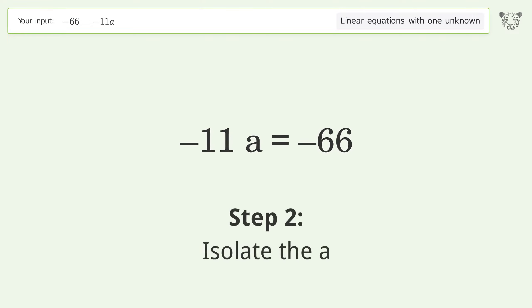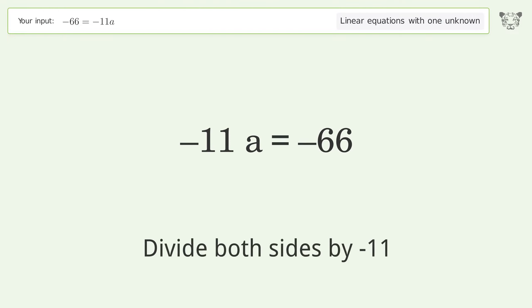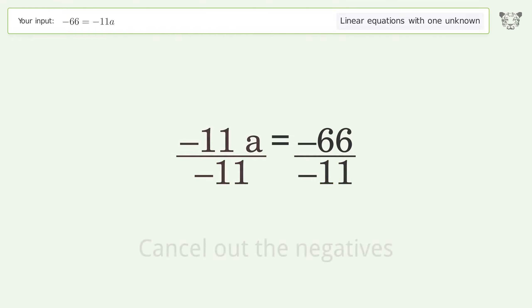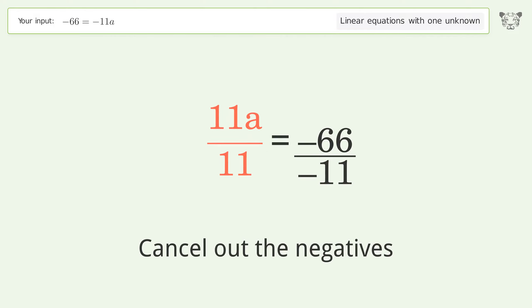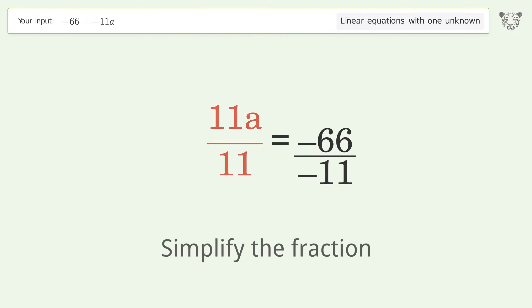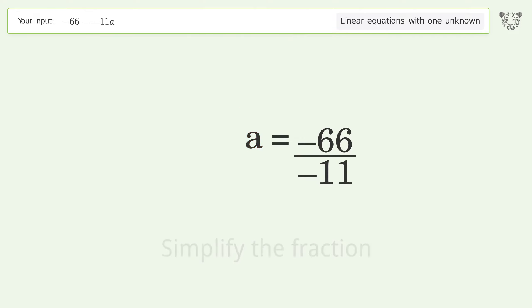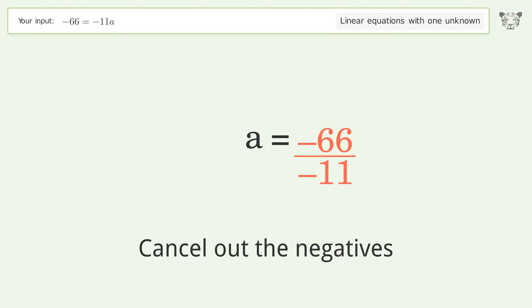Isolate the a — divide both sides by negative 11. Cancel out the negatives. Simplify the fraction. Cancel out the negatives.